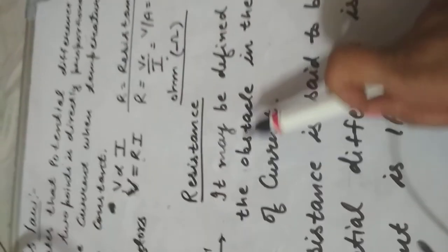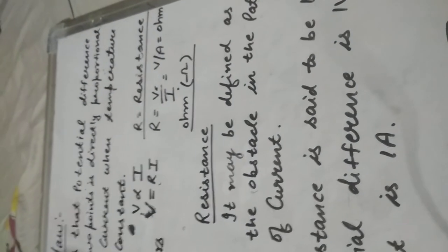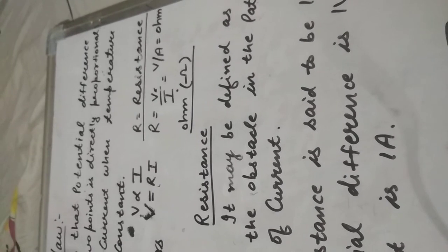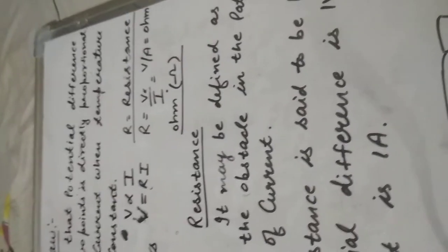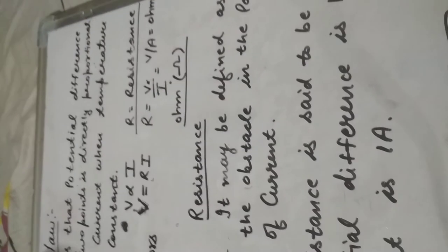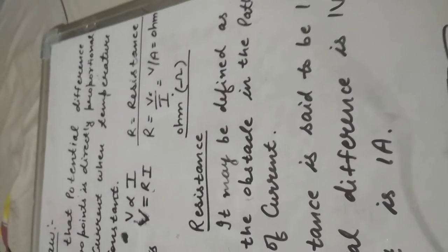अब बात करते हैं, यह जो constant है R, resistance की. इसकी definition: Resistance may be defined as the obstacle in the path of the current. Resistance — जब charges flow करते हैं, उन charges की flow में जो रुकावट होती है किसी भी conductor के अंदर, उस रुकावट को हम resistance कहते हैं. Hindrance in the path of the current is known as resistance.